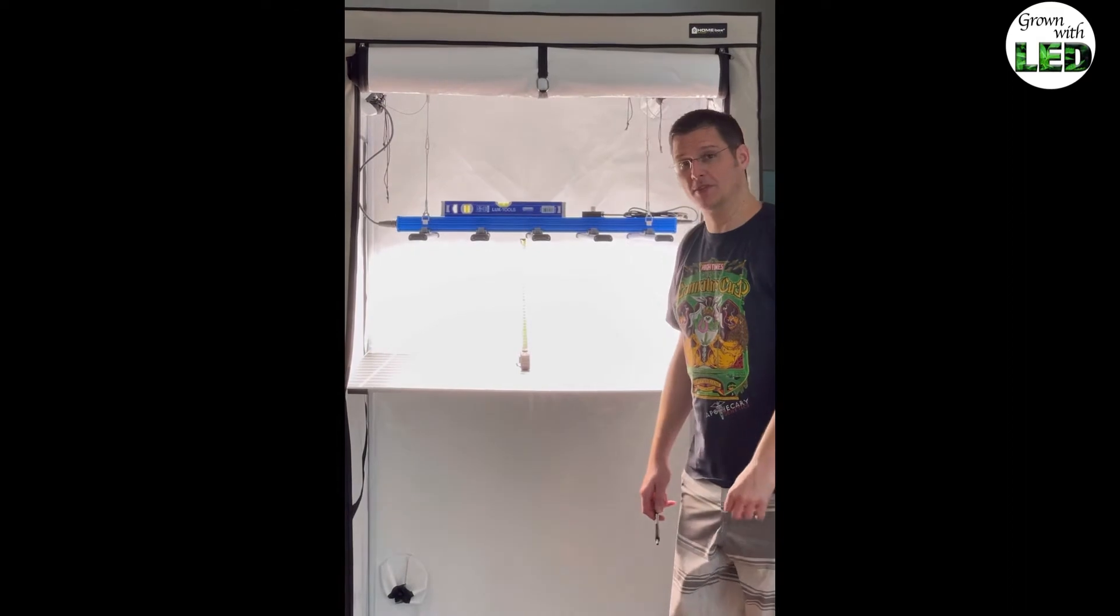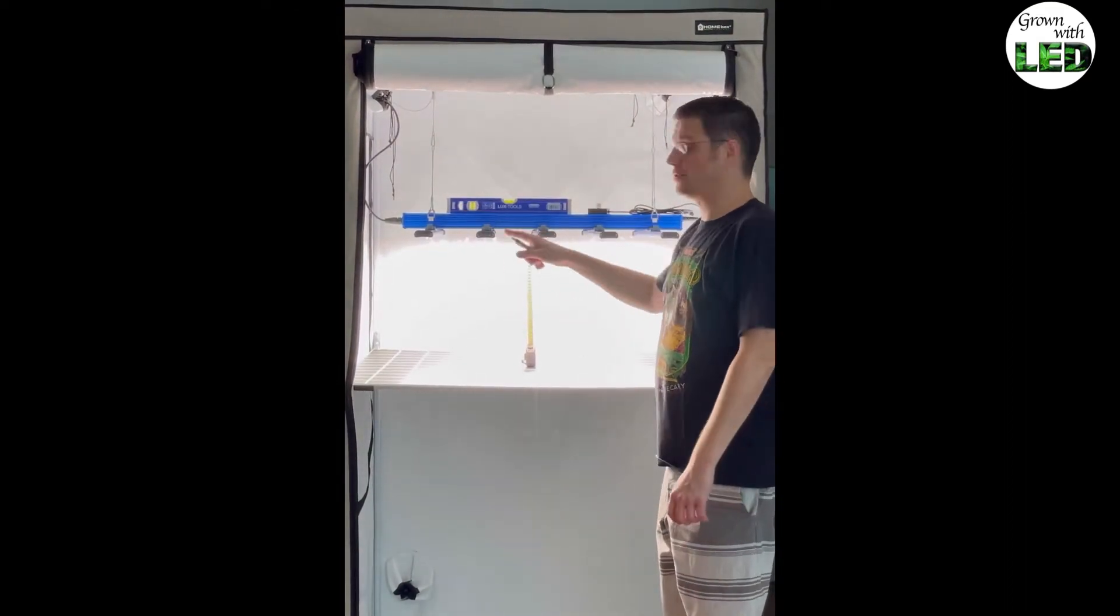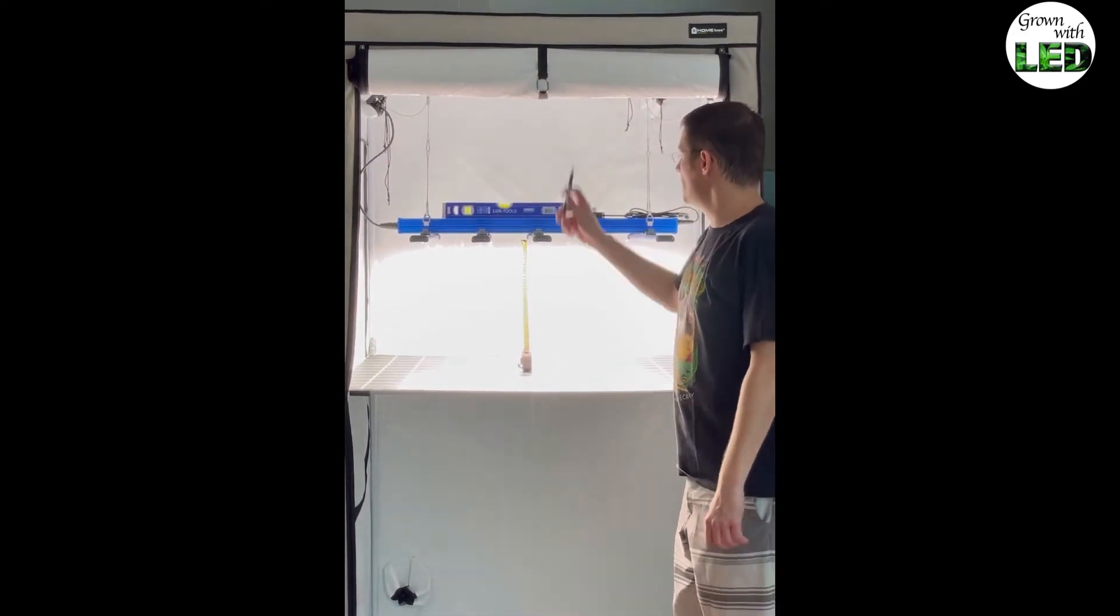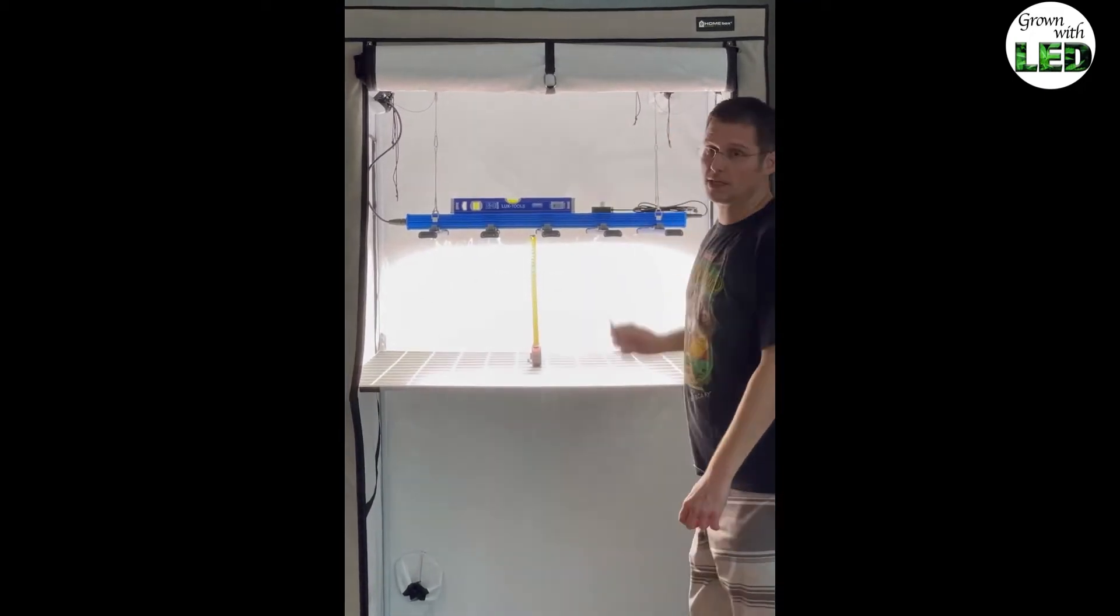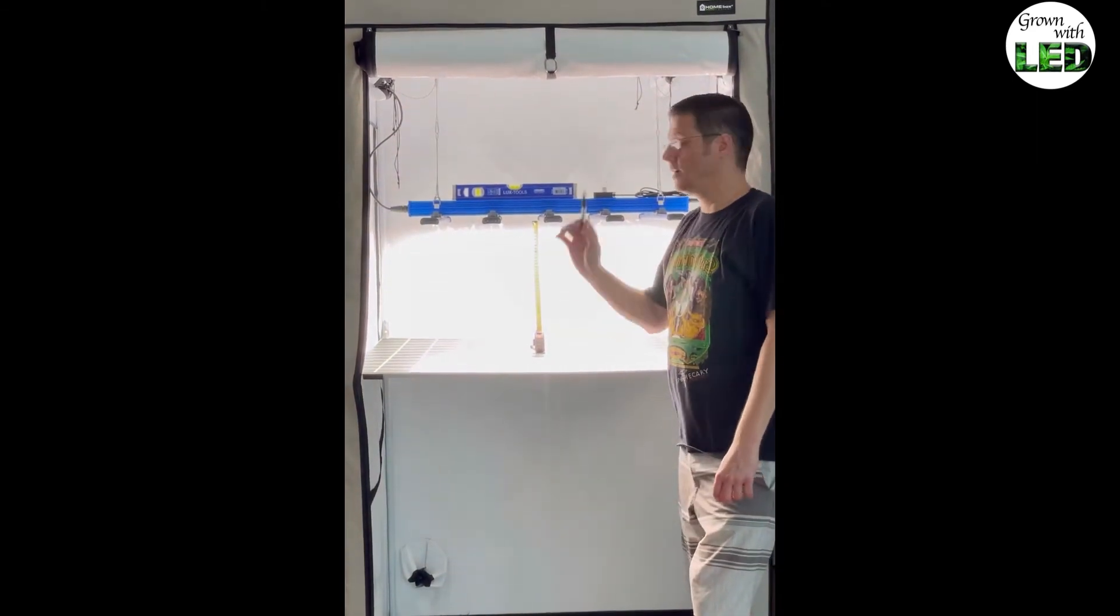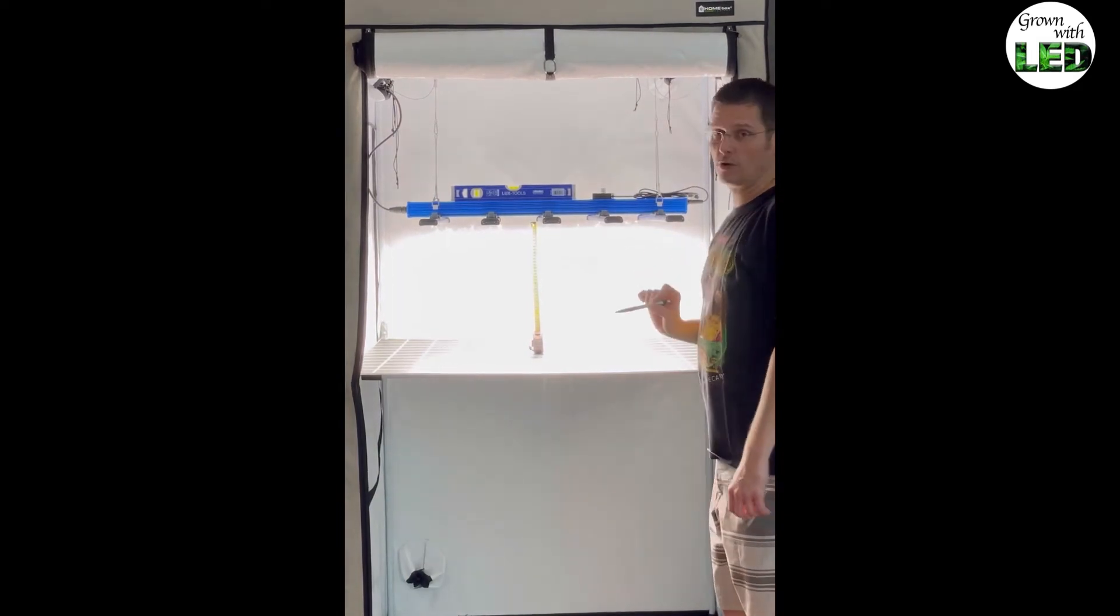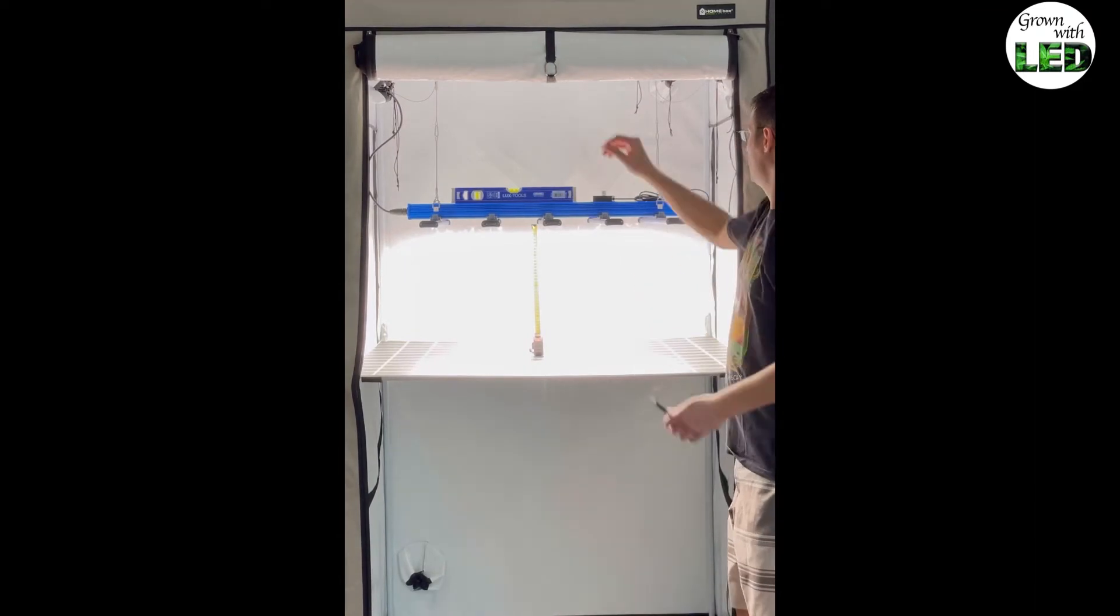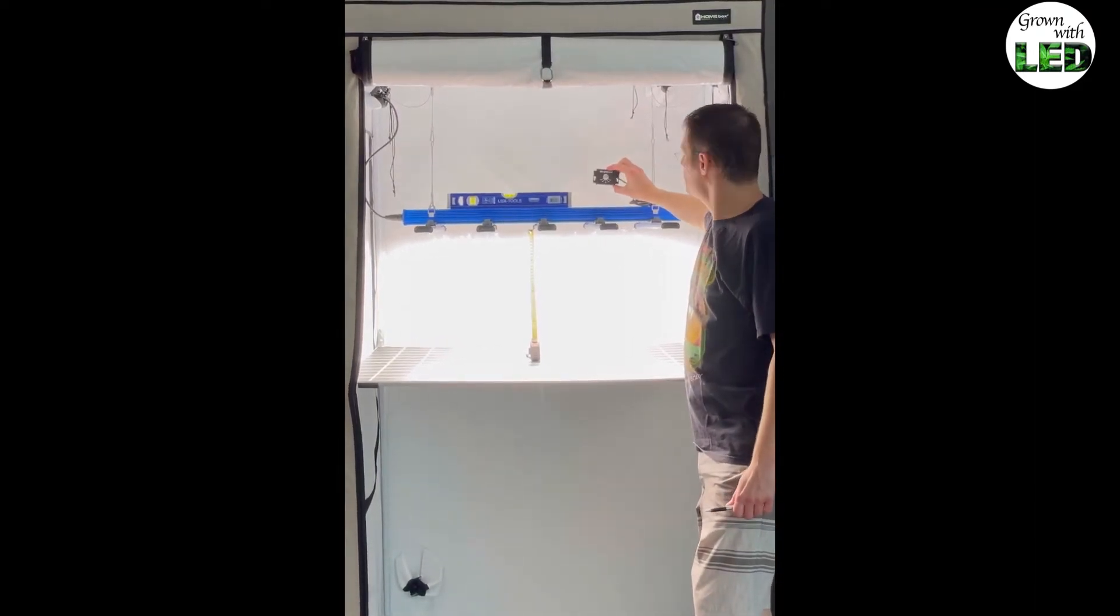After unpacking the MaxiBright Daylight, I put it together which is very easy. Those five light bars simply click on with a little plastic closer here. This is very easy. Then you have to install the hangers, hang it inside the tent. She's also not too heavy. It was easy to install in there. I put her exactly centered into the tent, equal distance from all sides. Plus, she's water level, as you can see here. And I also installed the dimmer, which is now set to 100%.